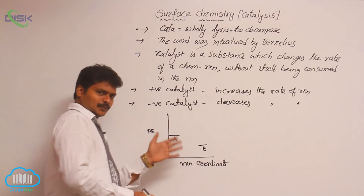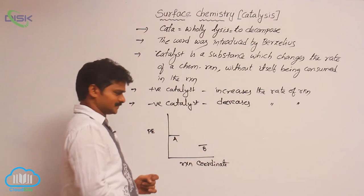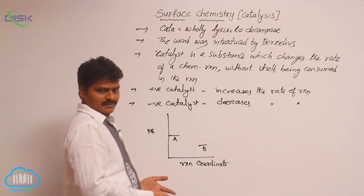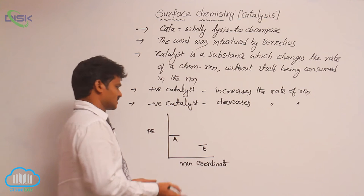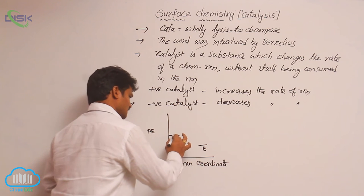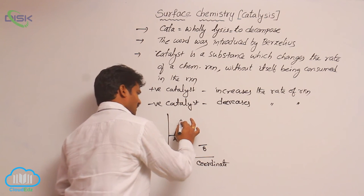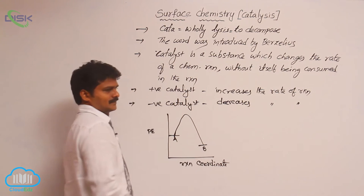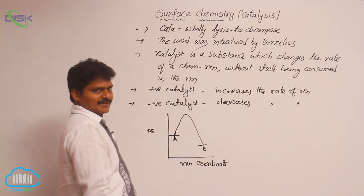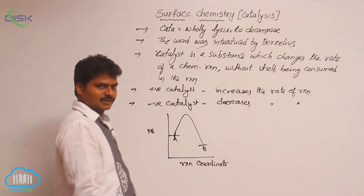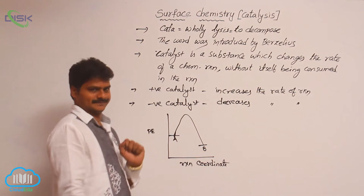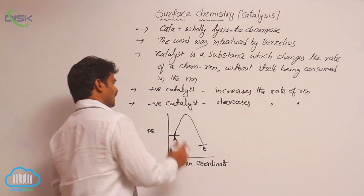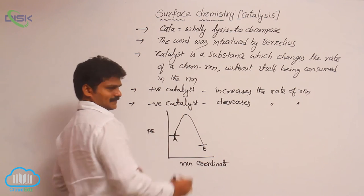Have a look at this potential energy diagram. Without a catalyst, this is the path followed by the reactants to give the products. Suppose the given reaction is exothermic — this thick line indicates the path of the reaction without a catalyst.